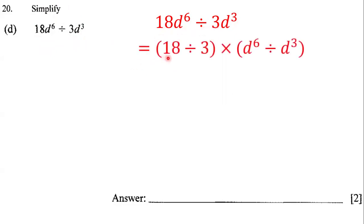So we have 18 divided by 3 and then we have d to the sixth power divided by d to the third power. What is 18 divided by 3? Well, 18 divided by 3 is 6.